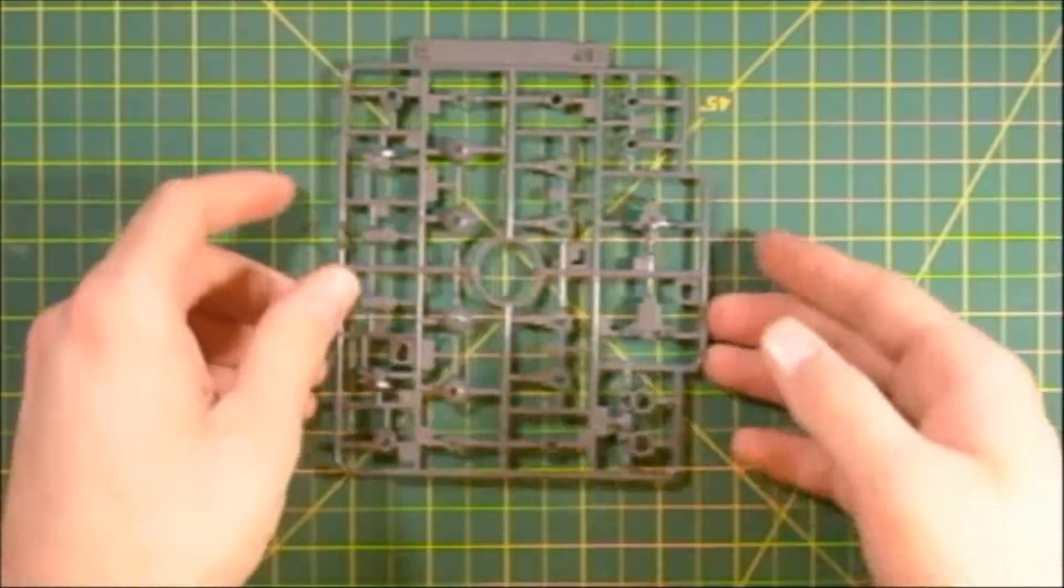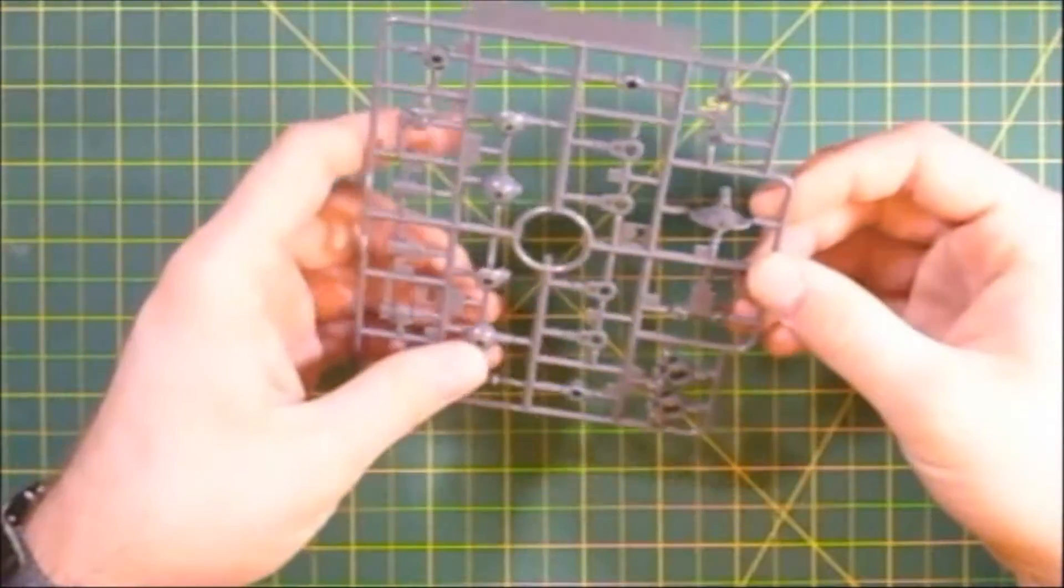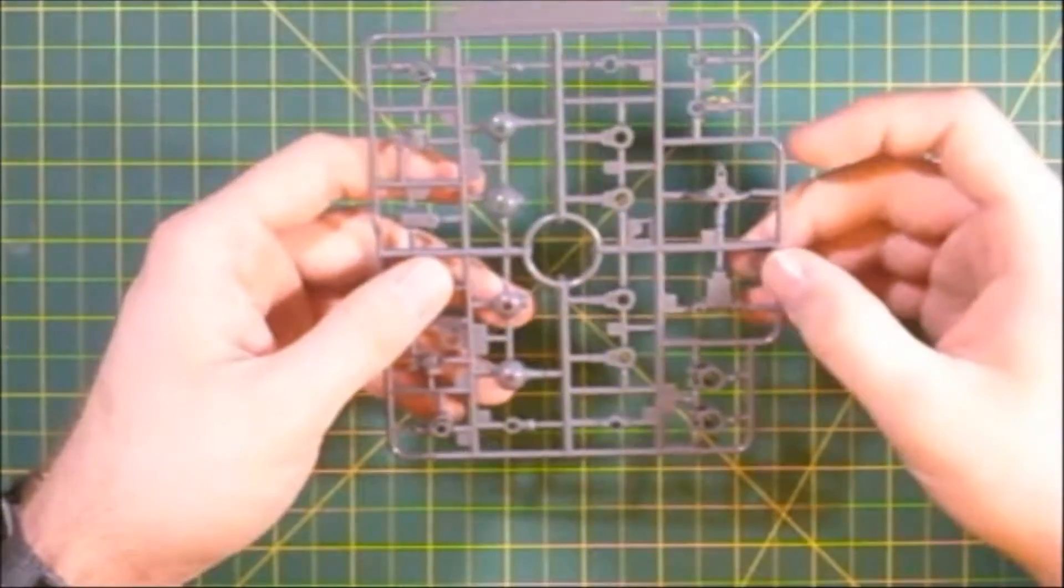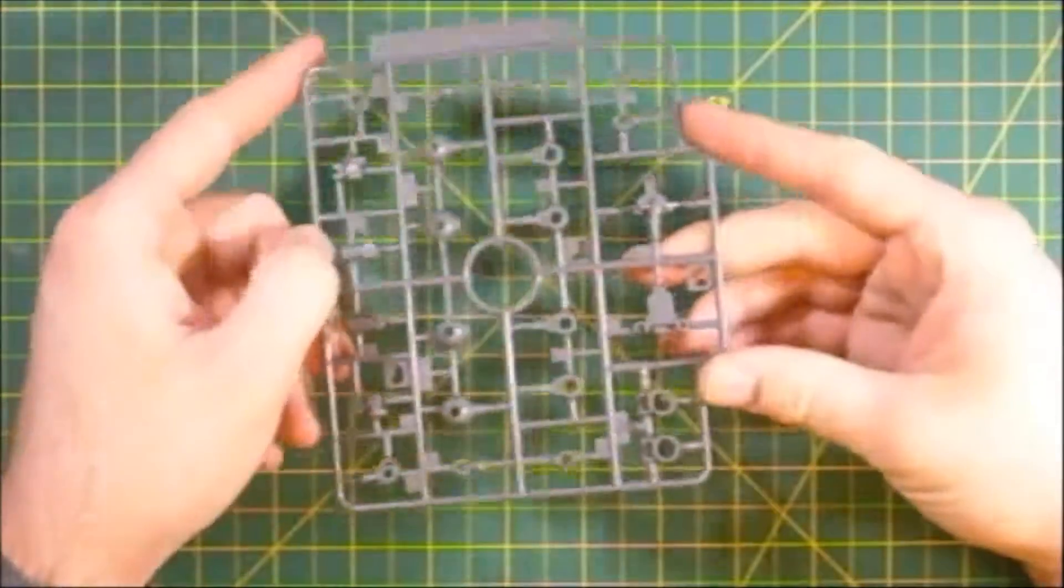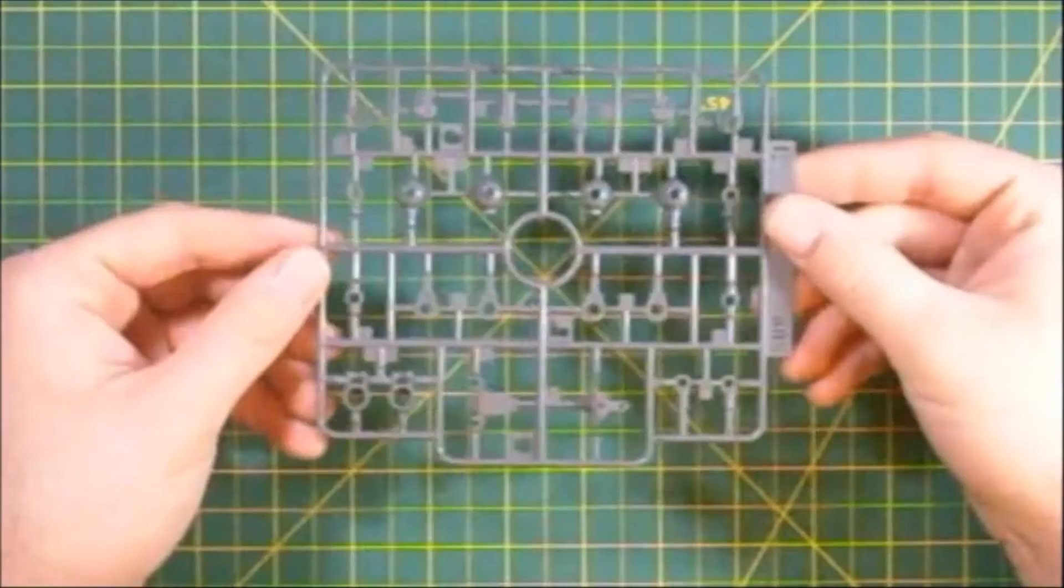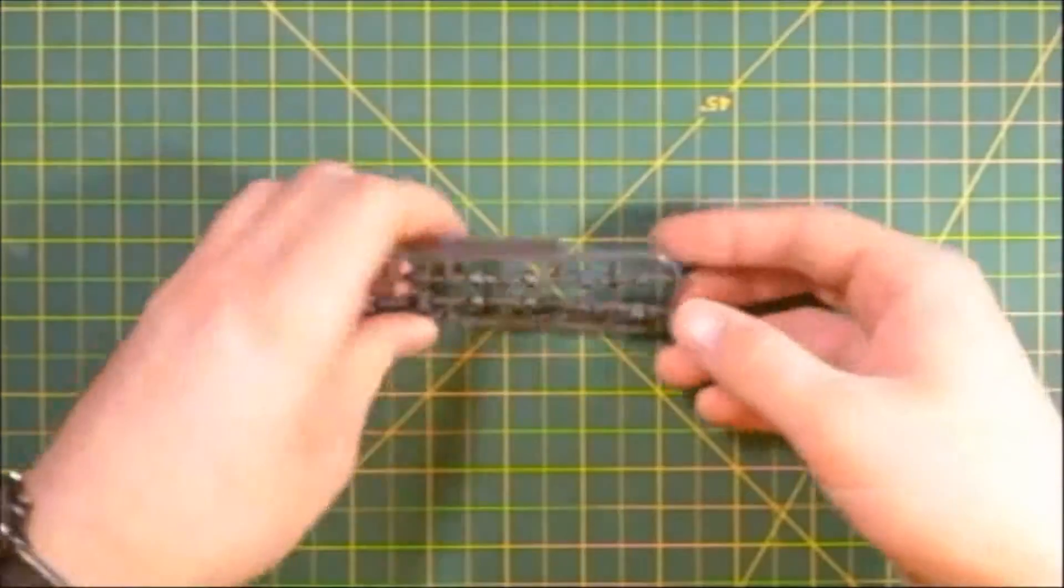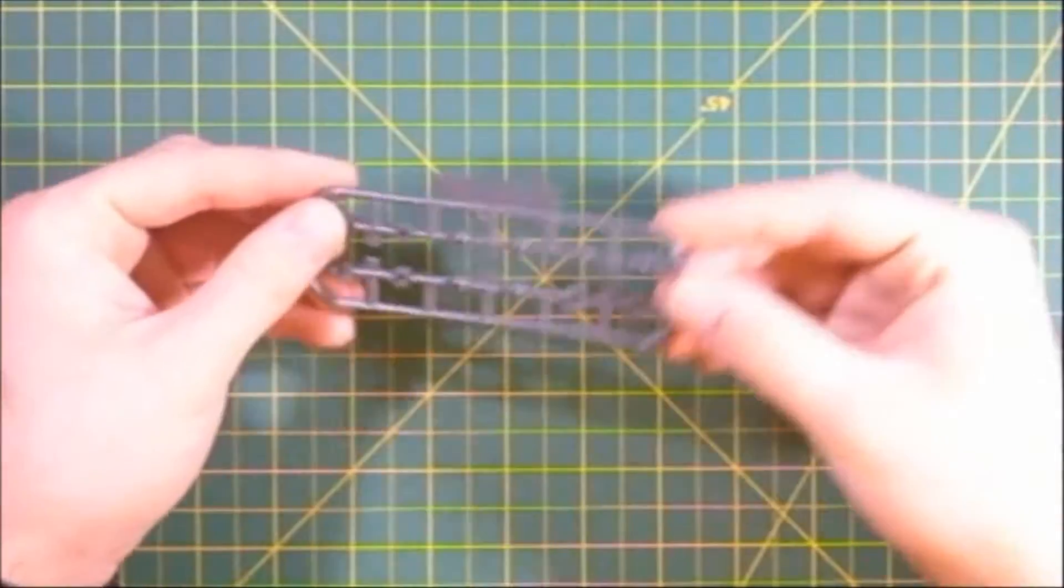And here we've got the E runner, and this is mainly just gonna be a bunch of pieces, pretty much the entire runner is just sections that are gonna be used for making the actual joints of the kit, molded entirely in gray plastic. And we've got a nice little polycab runner labeled PE for building a lot of those joints.